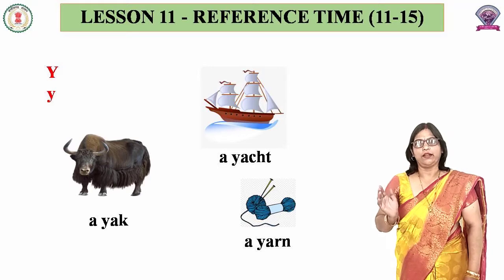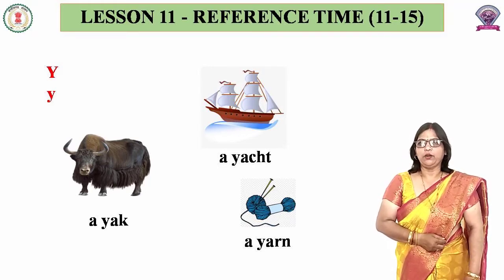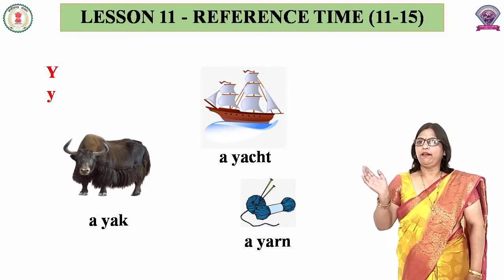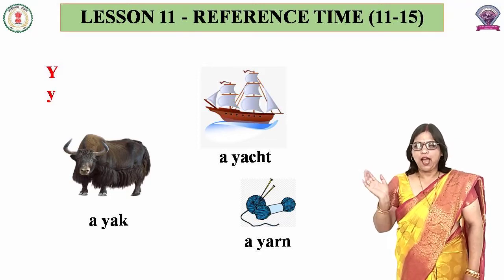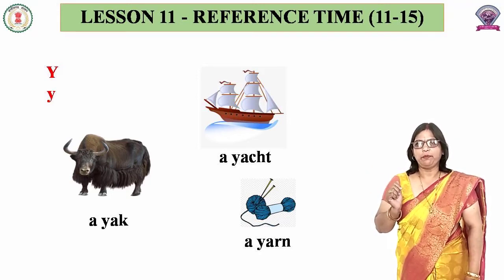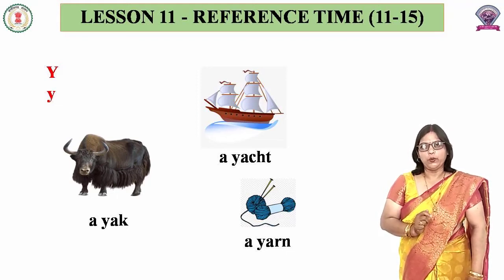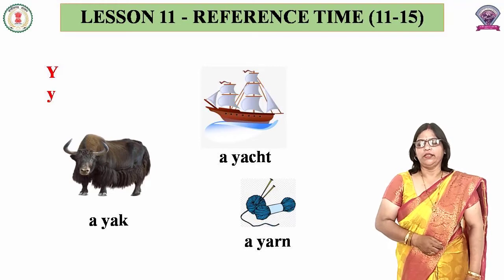Now we will show you that capital X is written. Again, we will use M — capital X is written. You will begin with Q, and you will find out M, which is called Yarn.